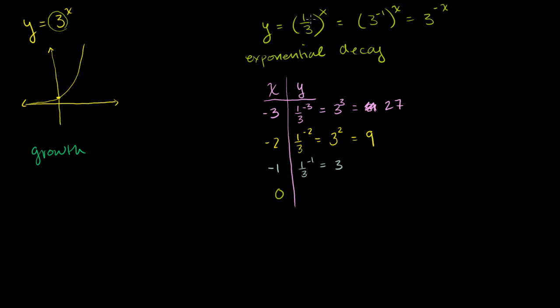What about when x equals 0? When x equals 0, remember, anything to the 0 power is 1. And then when x equals 1, one-third to the 1 power is one-third. When x equals 2, we have one-third squared, which is one-ninth. So let's plot this exponential decay function.